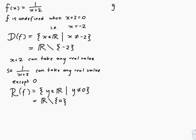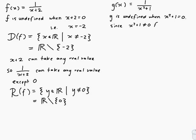Now let's look at g. g of x is equal to 1 over x squared plus 1. The domain of g is all the x's where g is defined. g is undefined when the denominator is 0, so when x squared plus 1 is 0. Since x squared plus 1 is never 0 — it's not equal to 0 for any x in R — it must be that the domain of g is just all real numbers. So I can just write that the domain of g is R.